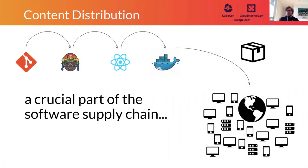Content distribution is part of the software supply chain and a very crucial part too, because it's at the user boundary in this software supply chain graph. By software supply chain, I mean all the steps that are carried out in order to write software, to test it, build it, package it, and to finally ship it out. Being at the edge of this graph, content distribution needs to be done carefully, because whatever gets distributed is what the user receives. Once software leaves the premises of the software producers, they will have a hard time enforcing any quality assurance on the software.